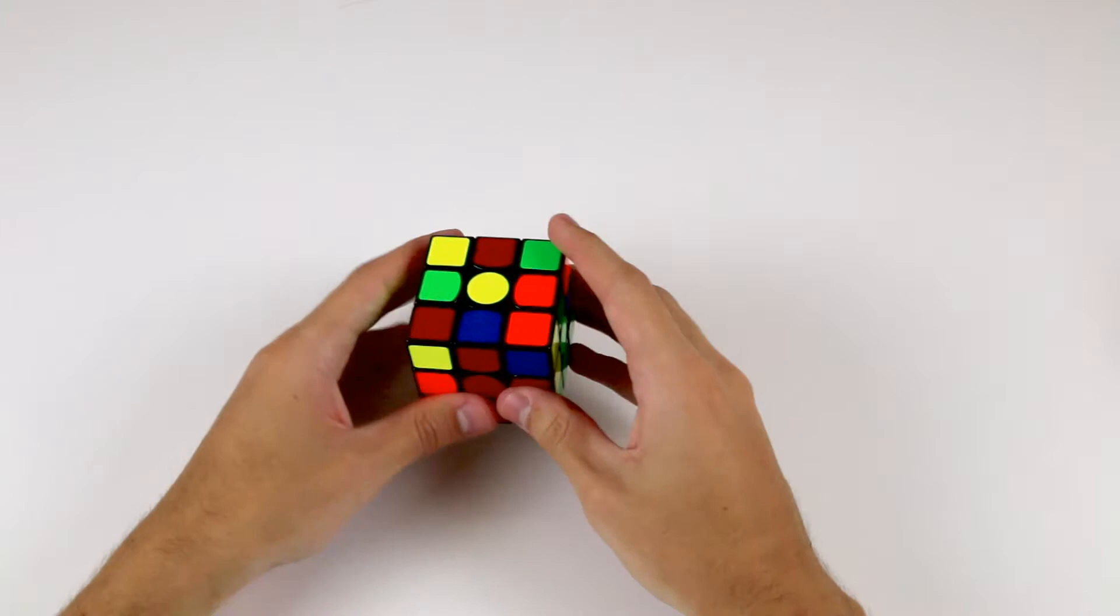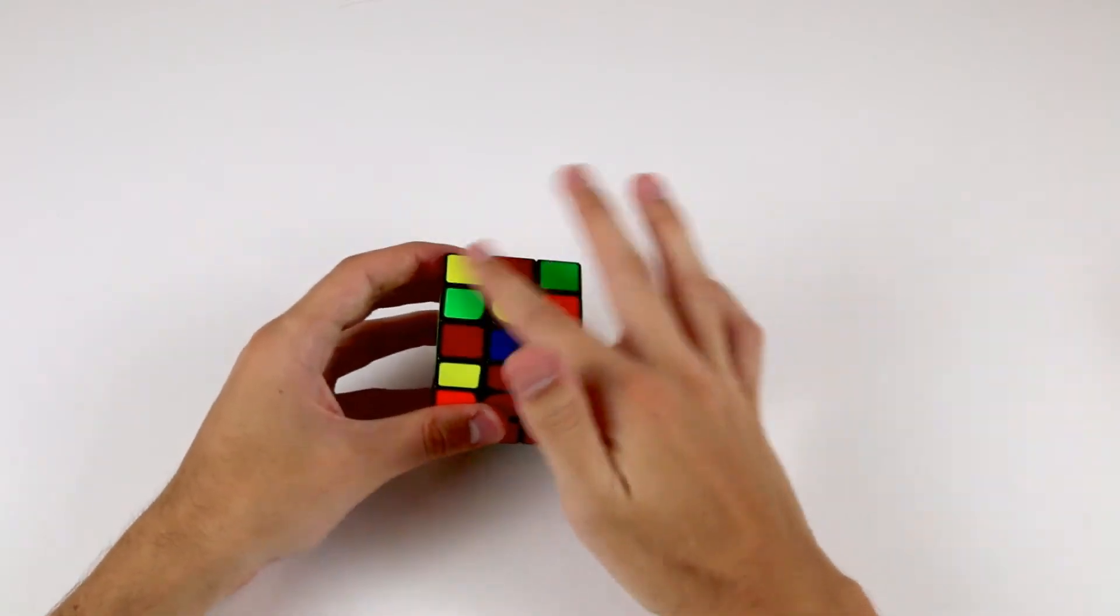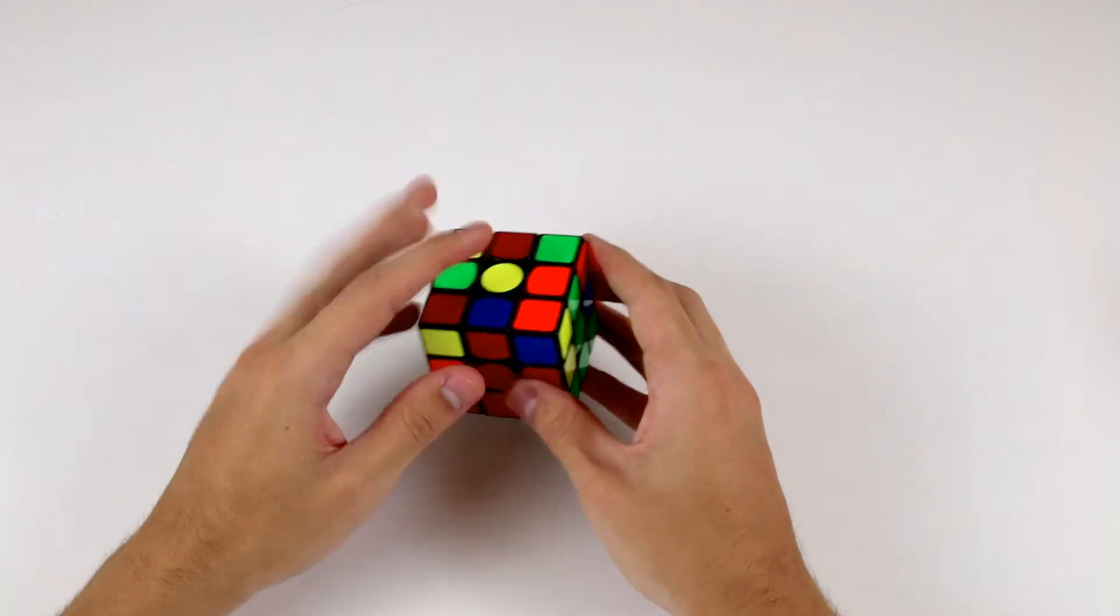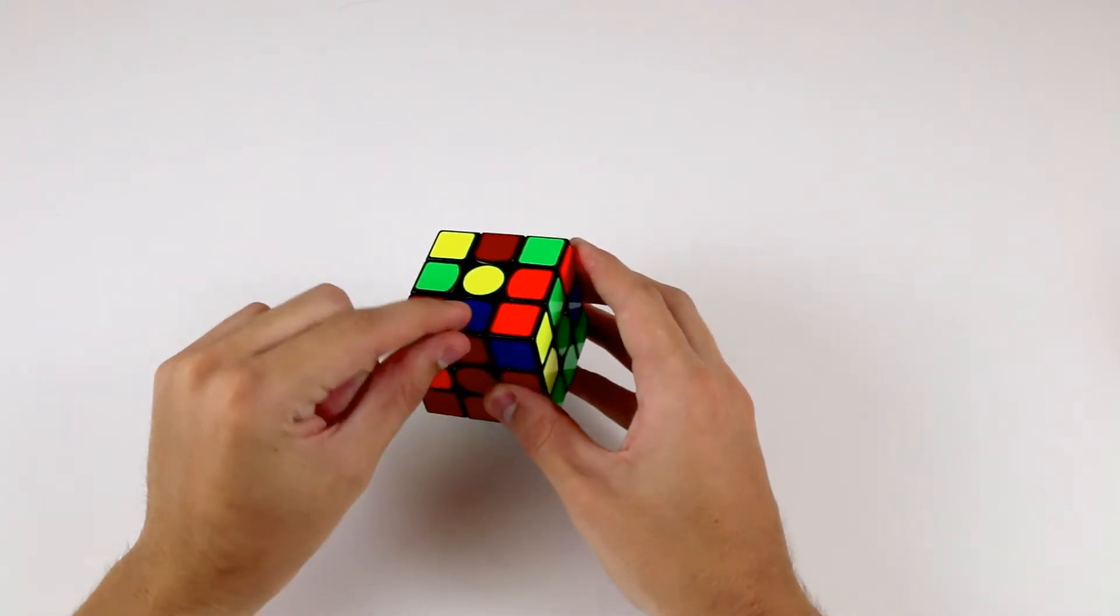The edge pieces that we want to solve are those which don't contain the color of our top layer. So for us, if you've solved the cross on your white side, these will be the edge pieces which don't contain a yellow sticker.